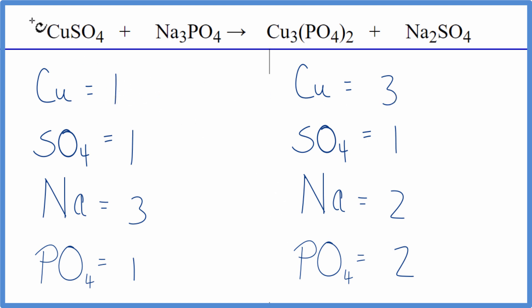Let's put a three in front of the copper sulfate first. That'll balance the coppers. One times three. That'll give us three copper atoms. Those are balanced. And then the sulfate, one times three. So now we have three sulfate ions.